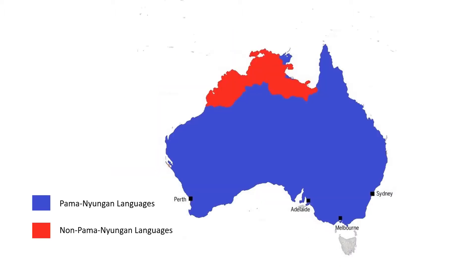If we look at a linguistic map of all the languages spoken in Australia and try to group them into families — kind of like how in Europe most languages are Indo-European, or in the Arabian Peninsula Arabic is Semitic — we see a very strange pattern. About 90% of all the languages, covering this huge indigo area, belong to a family called Pama-Nyungan. It's spread out across the whole continent, with only a very small number of non-Pama-Nyungan languages.